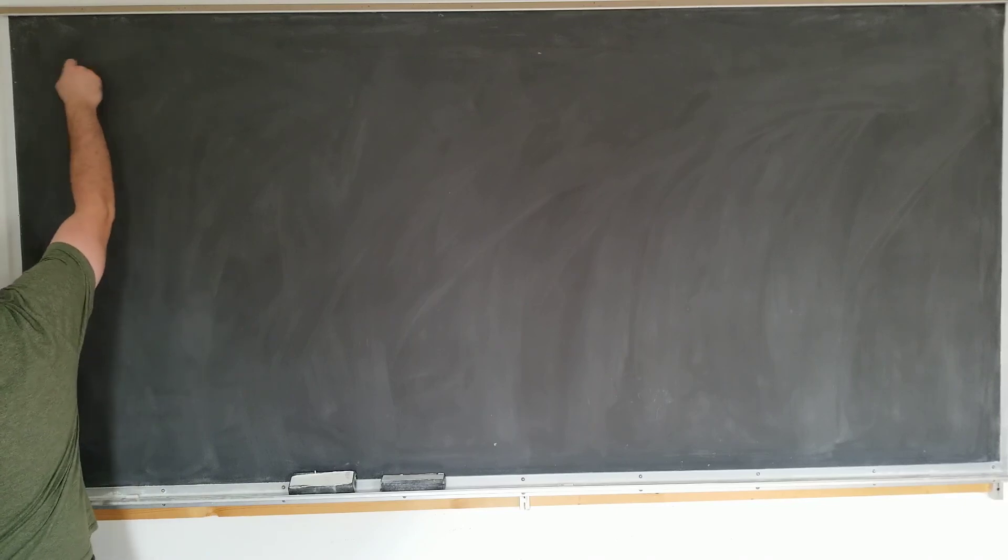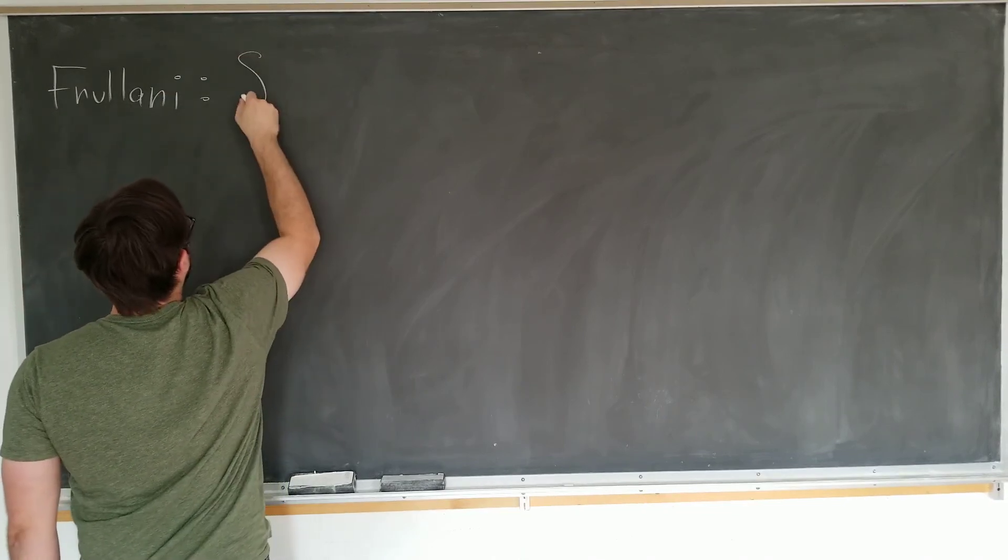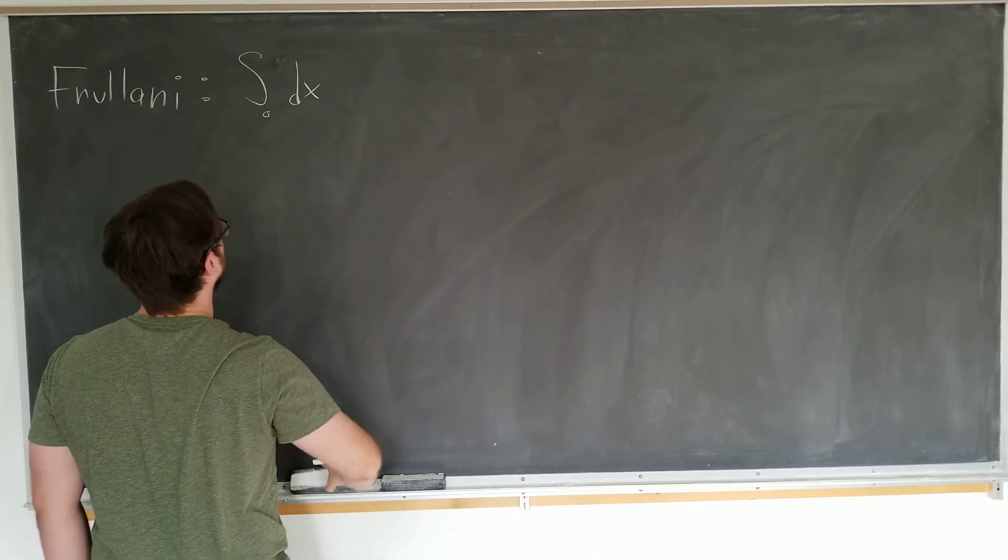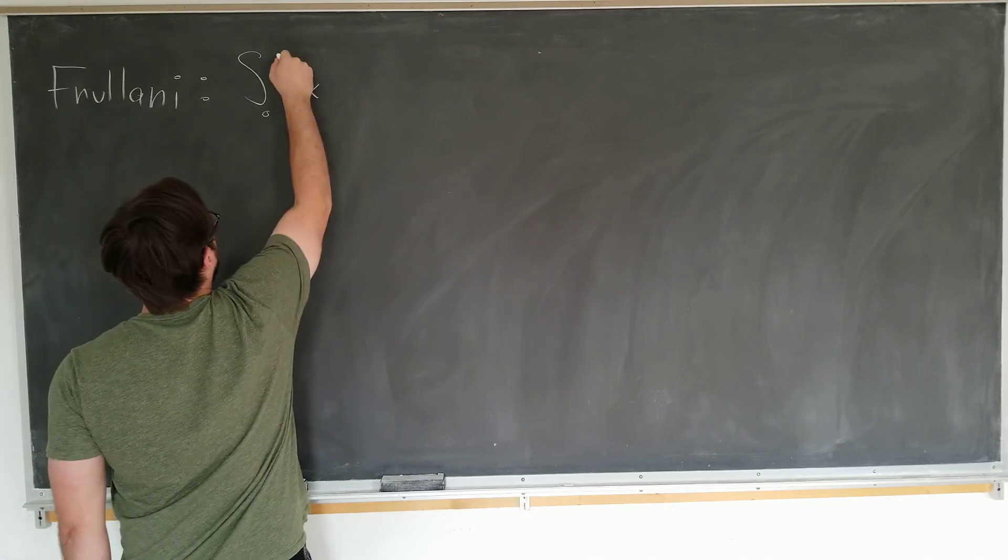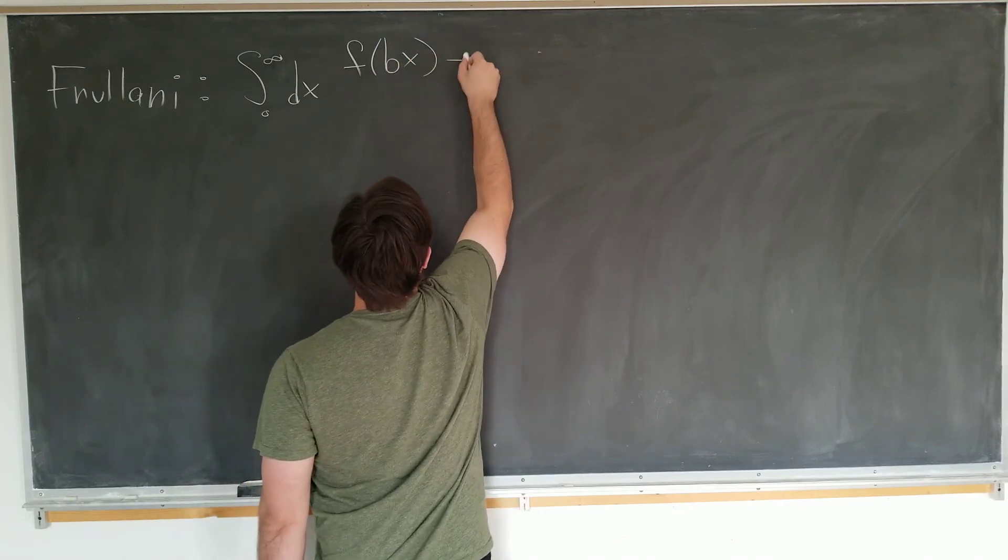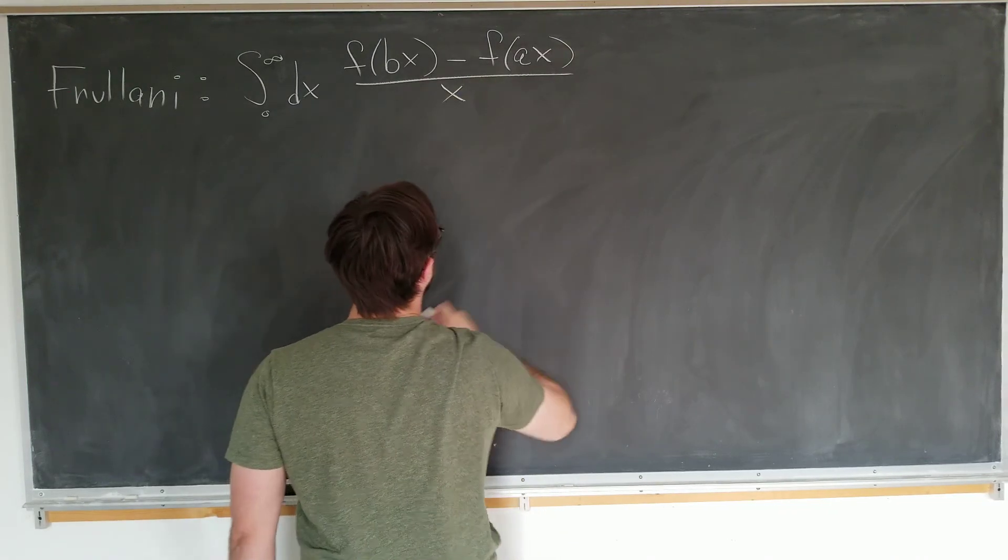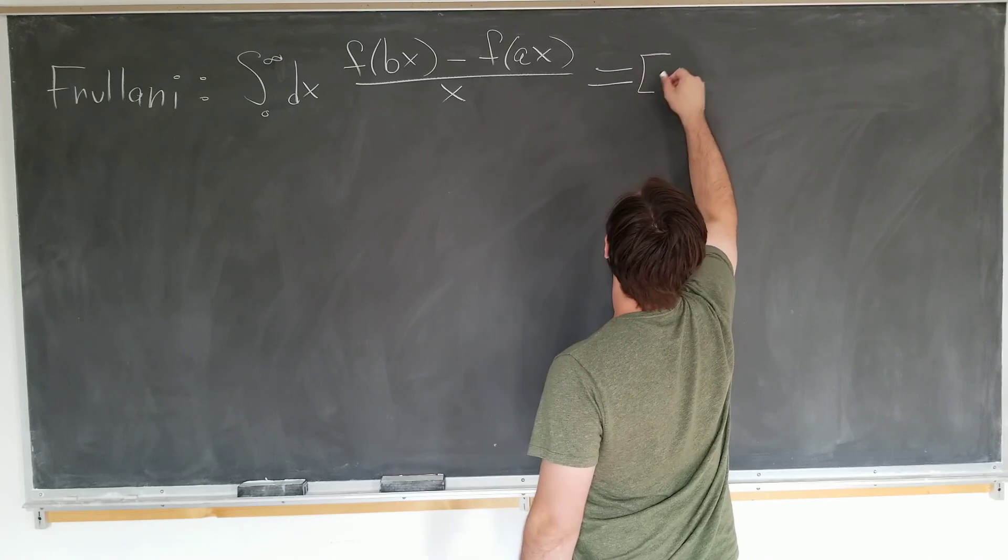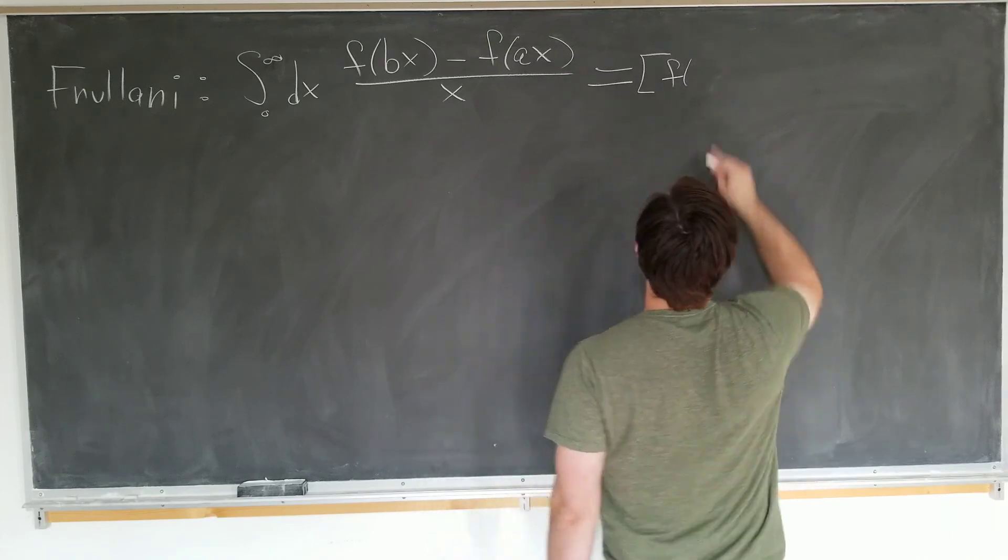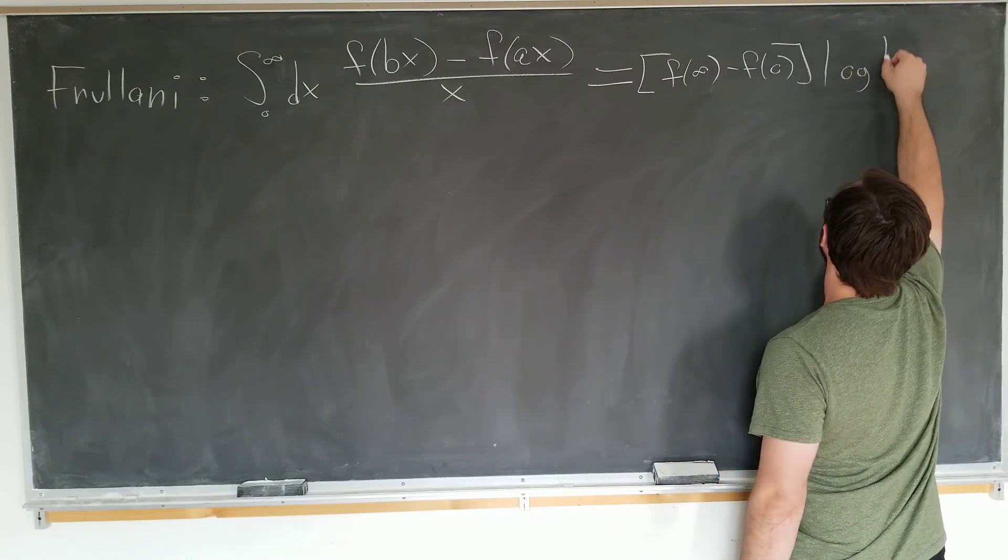The Frulani integral states that, Frulani must be an Italian mathematician, that if we integrate from 0 to infinity with respect to our variable x of any function of some arbitrary constant b times x minus the same function, by the way, at arbitrary constant a times x over x, we will have f of infinity minus f of 0 times log of b over a.